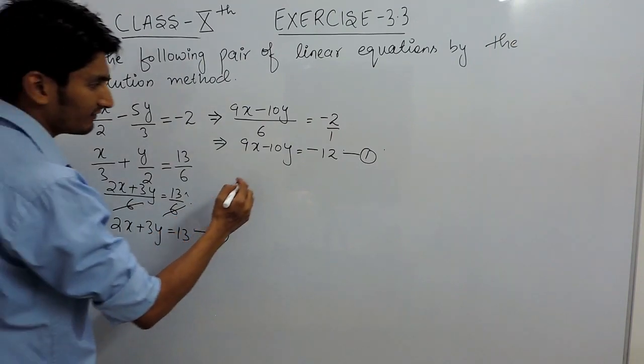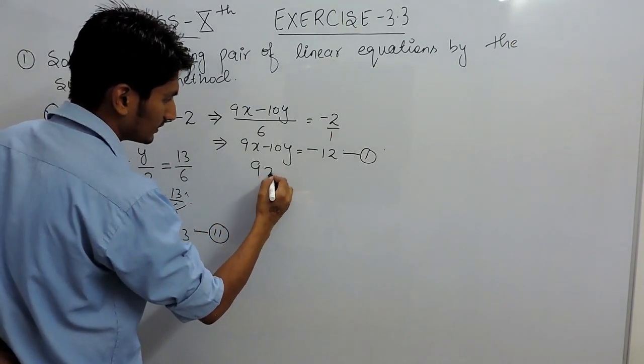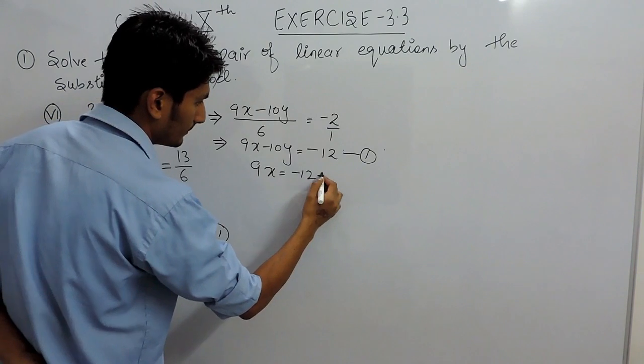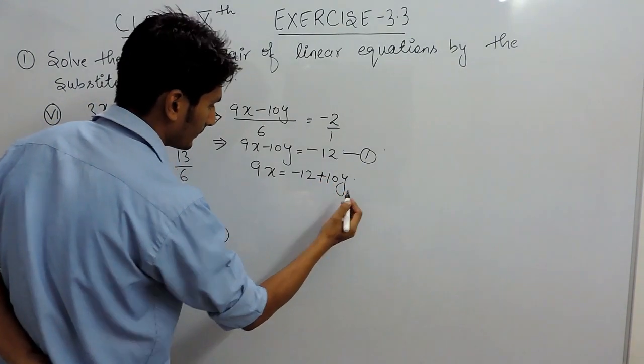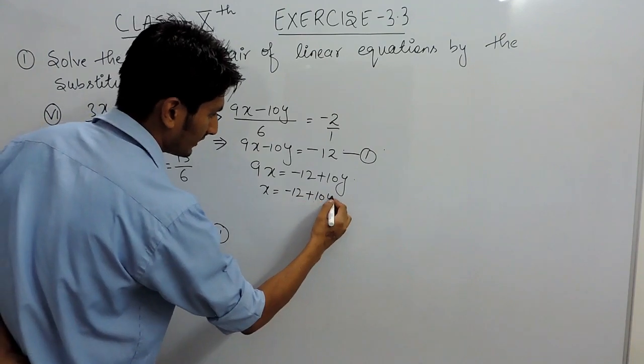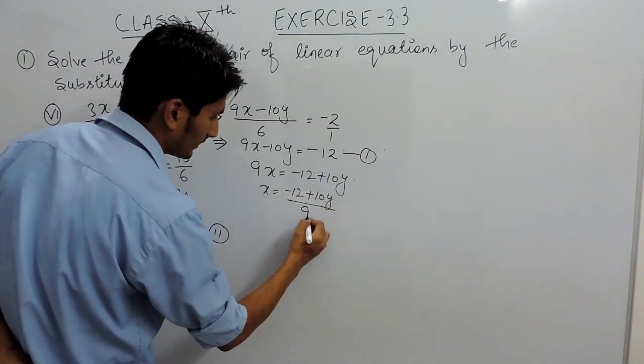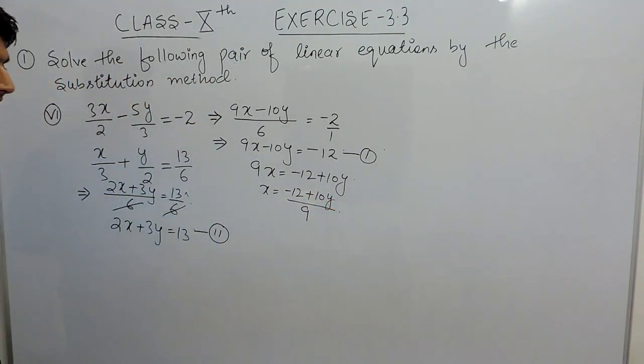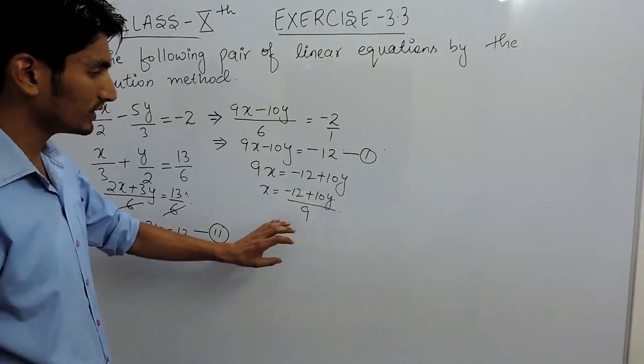I am finding the value of x. So this is minus 12 plus 10y, and the value of x must be minus 12 plus 10y whole upon 9. So this is the value of x from equation first.